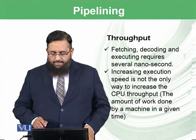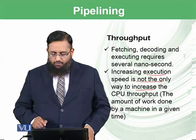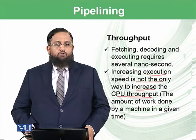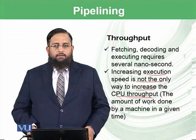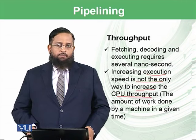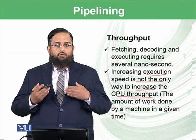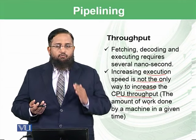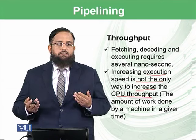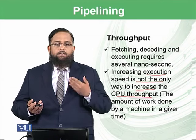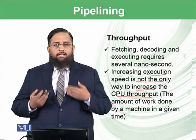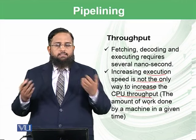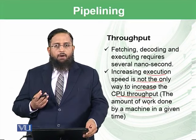Increasing execution speed is not the only way to increase CPU throughput. First, we should define what throughput is. Throughput is basically the amount of work done by a machine in a specified time. One way to increase computer speed would be to travel faster than the speed of light, which is not possible at the moment. So instead, we make the procedure work in such a way that it expands the speed and throughput of the overall system — and that is what pipelining does.